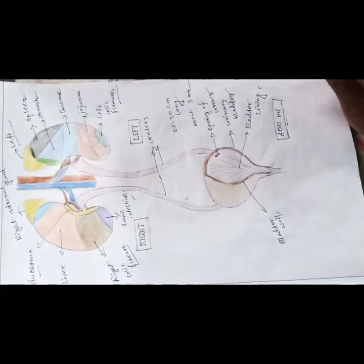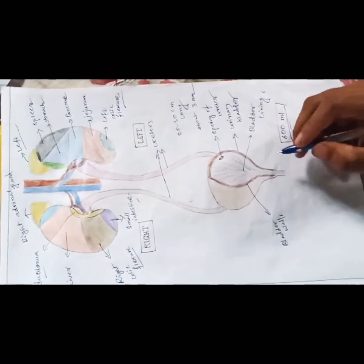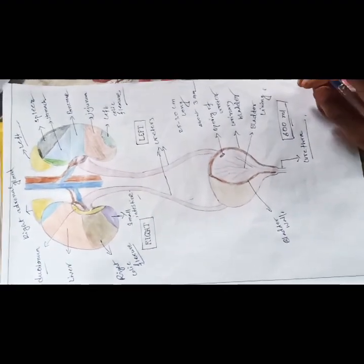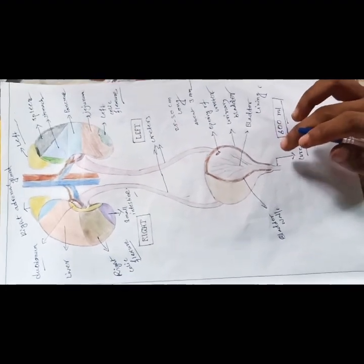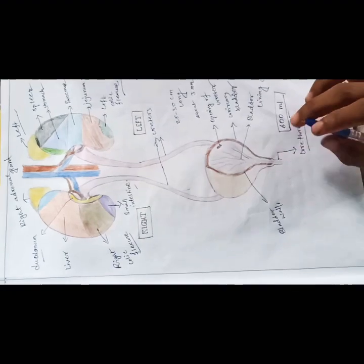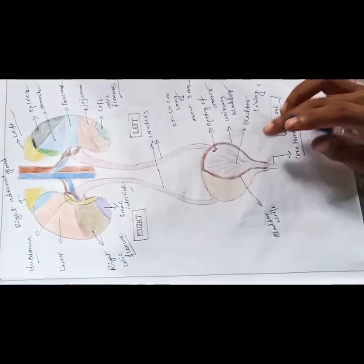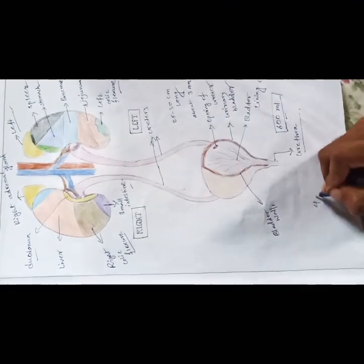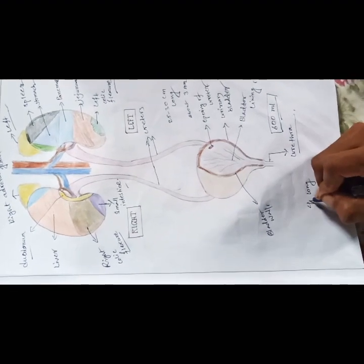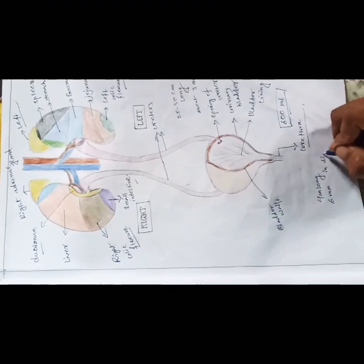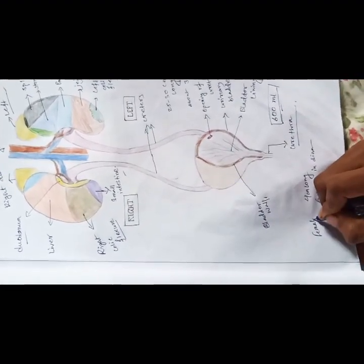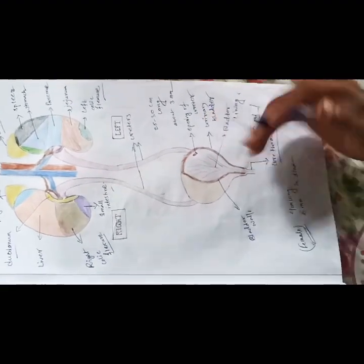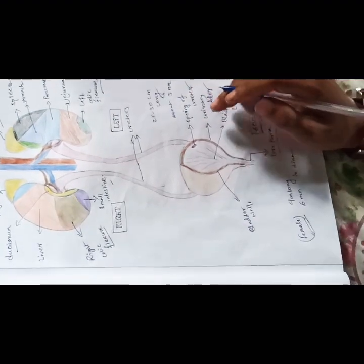Now I am going to discuss about the urethra. The urethra is a canal extending from the neck of the bladder to the exterior at the external urethral orifice. It is longer in the male than in the female. The female urethra is approximately 4 cm long and 6 mm in diameter. It runs downward and forward behind the symphysis pubis and opens at the external urethral orifice just in front of the vagina. Its main function is to convey urine from the urinary bladder to the exterior.